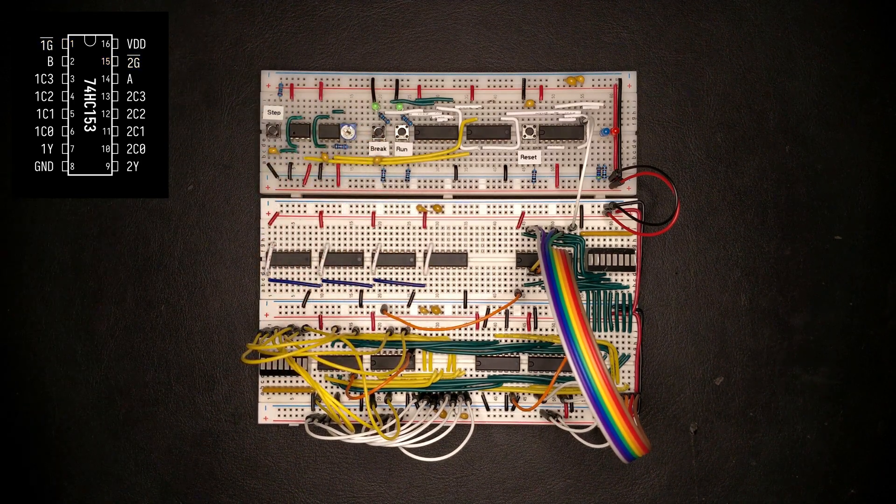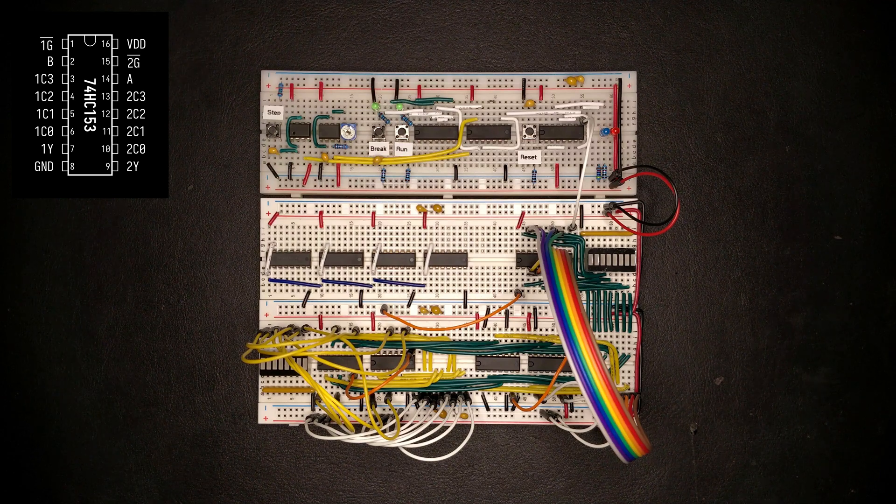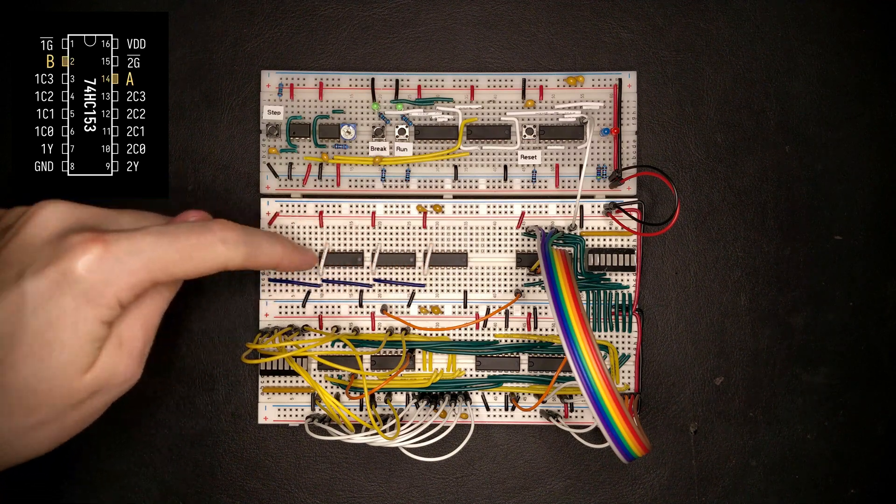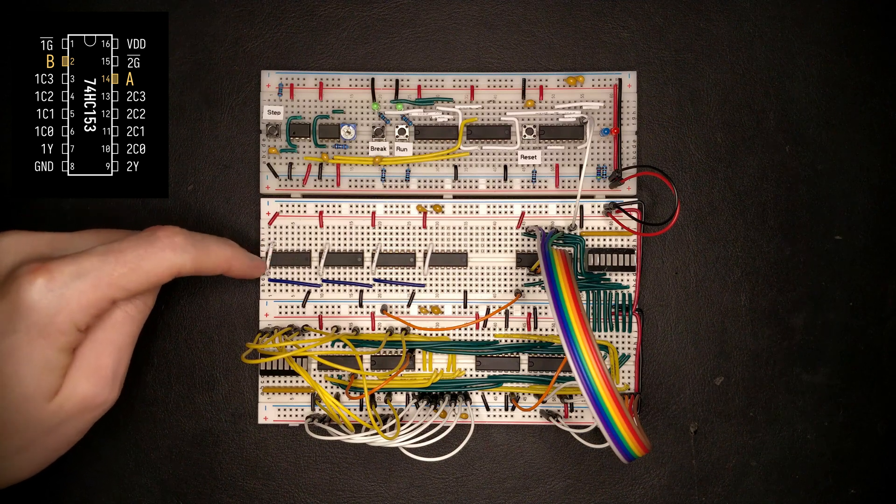All right, that's all of the enable lines of the multiplexers connected. Now let's hook up the A and B inputs, which is basically the selector signal of all the chips.